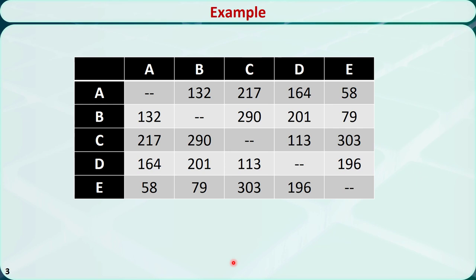Let's check an example with five cities: A, B, C, D, and E. We want to find the best sequence so that the total distance traveled will be minimized. Here is the distance matrix.